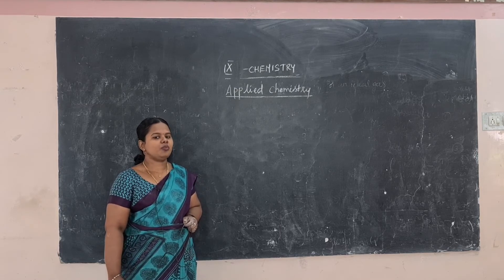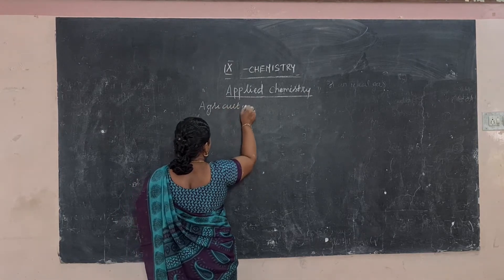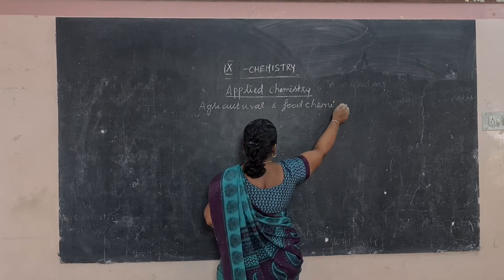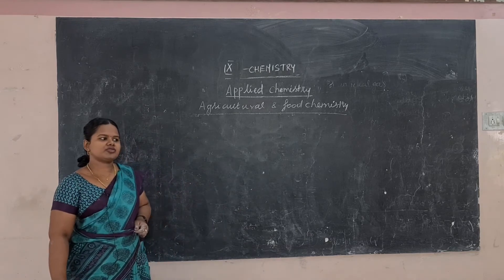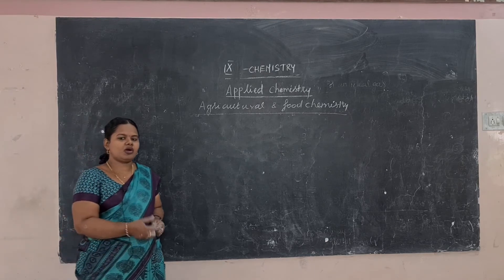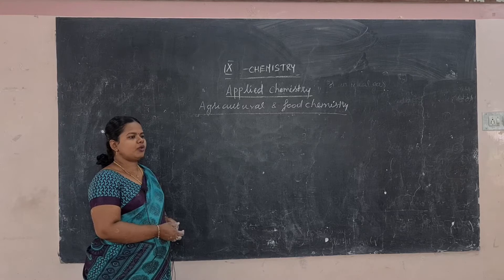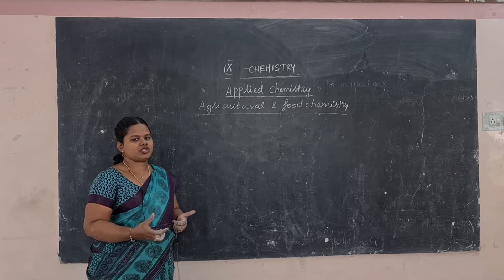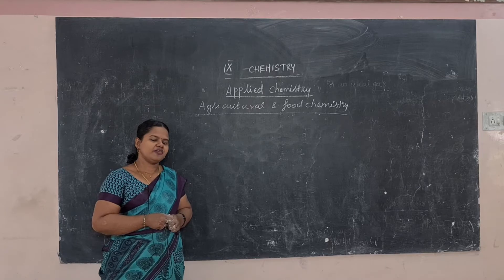First, we are going to learn agricultural and food chemistry. Agricultural chemistry is the chemistry that involves applying chemical and biochemical knowledge in agriculture — specifically in plant production or crop cultivation. Nearly 40% of the global population is engaged in agriculture.